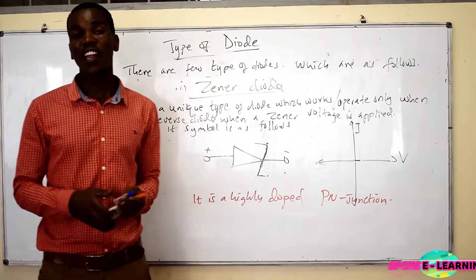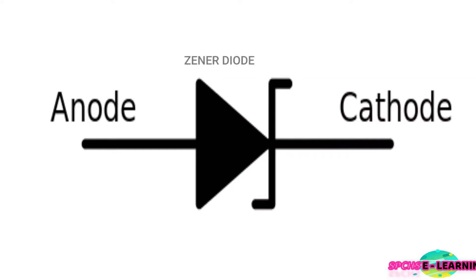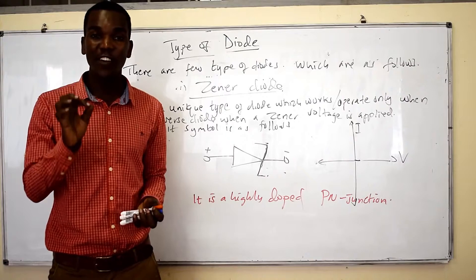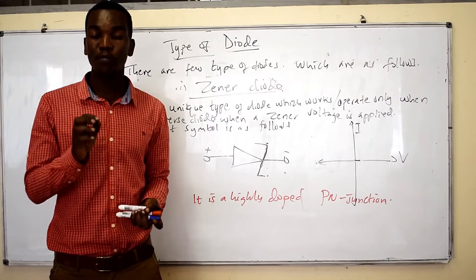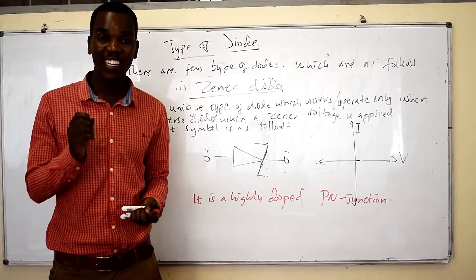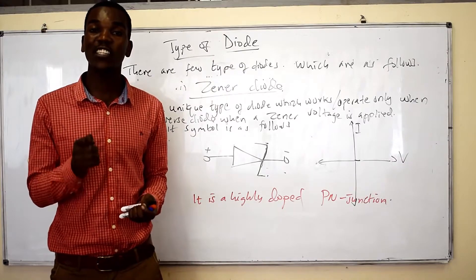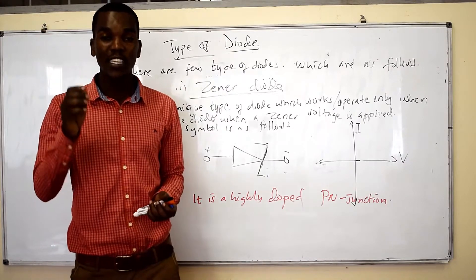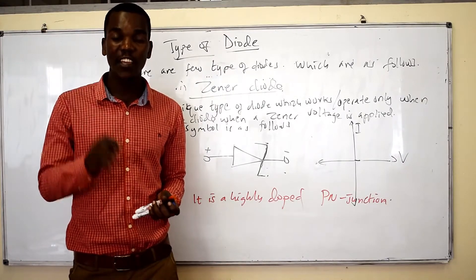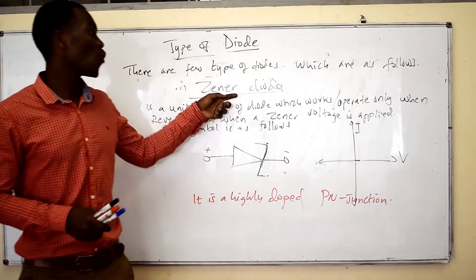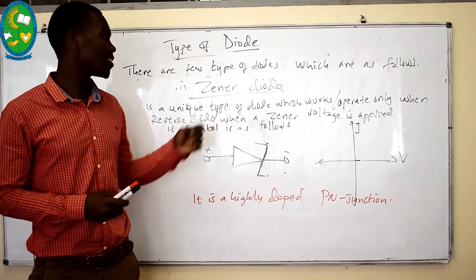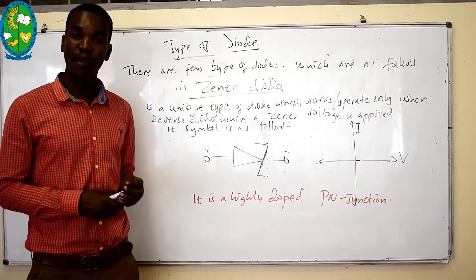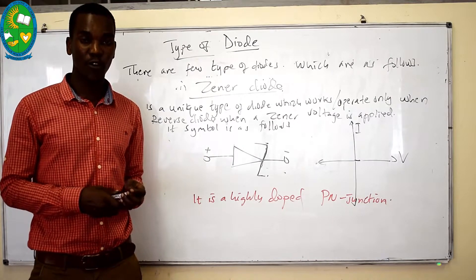A Zener effect is just an effect in which he discovered that when you apply a reverse current on a PN junction which is highly doped, it will start to conduct. This Zener effect is what gave us this name of this diode, which is Zener diode.